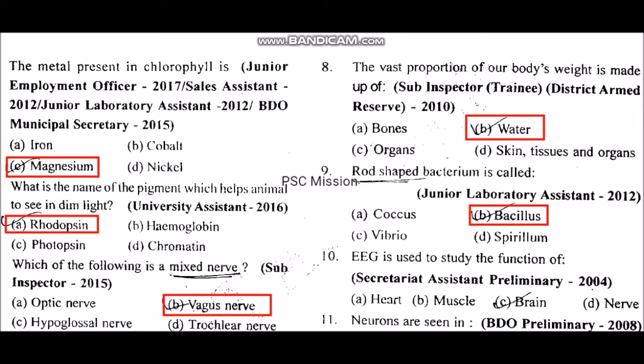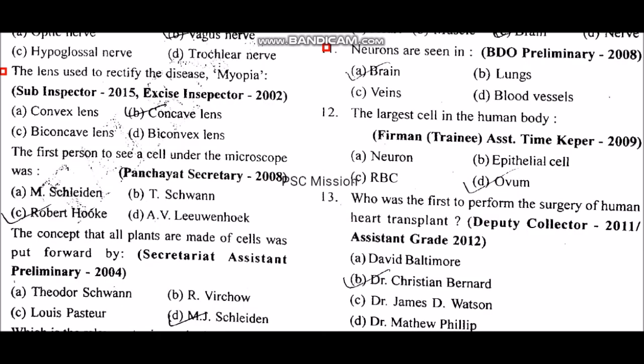EEG is used to study the function of the brain. The concave lens is used to rectify the disease myopia. The first person to see a cell under the microscope was Robert Hooke.